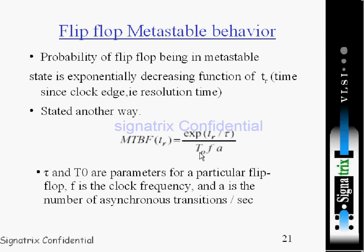The aperture is wherein a data edge triggers a metastable event. F means clock frequency and A means asynchronous data edge. Elaborating on this particular exponential function: this is nothing but the probability of a metastable state persisting longer than a time TR. TR decreases exponentially as TR increases, and this relationship is characterized by this equation.